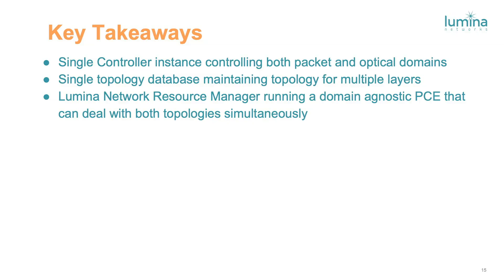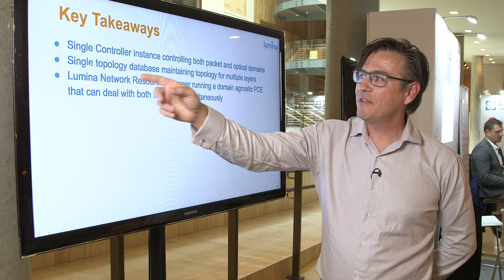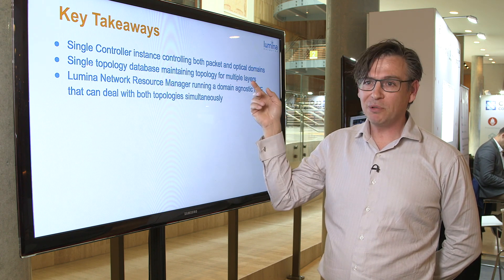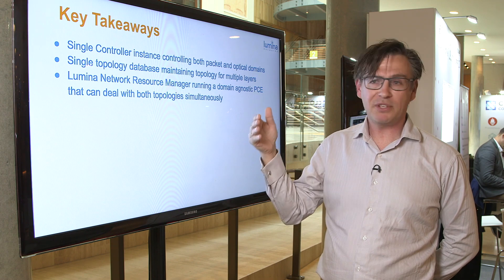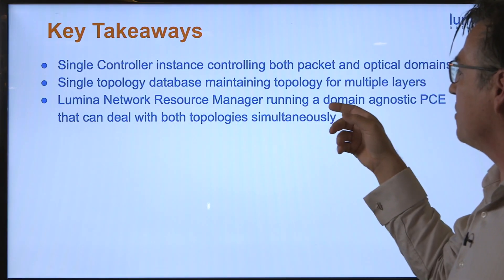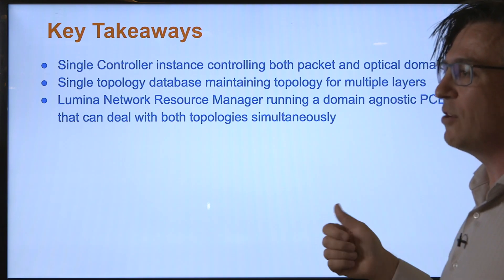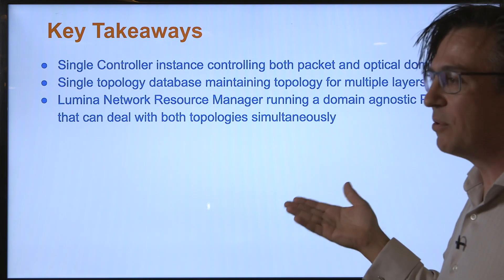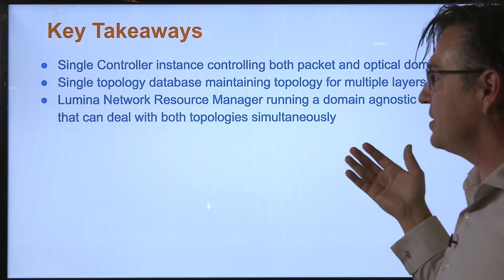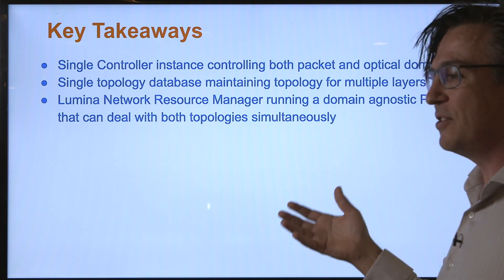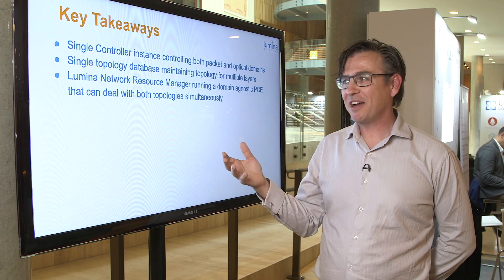The key takeaway is we have a single controller instance controlling both the packet and optical domains. We have a single topology database maintaining the topology for multiple layers — optical and packet — in a single topology database. We have LUMINA Network Resource Manager running a domain-agnostic PCE, meaning we can run an optical domain, a packet domain, and several different types of domains with one PCE. It can deal with both topologies simultaneously.